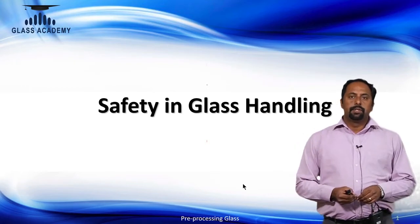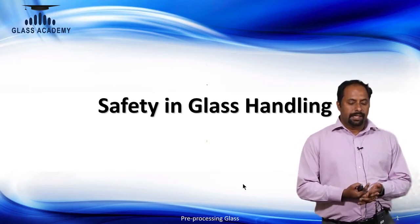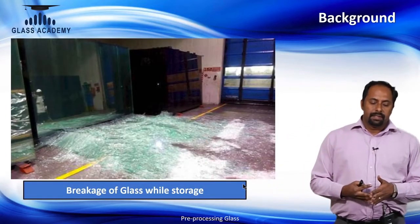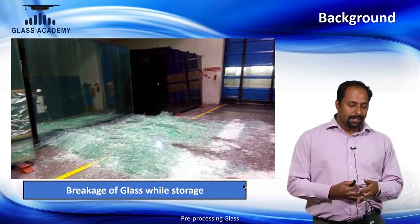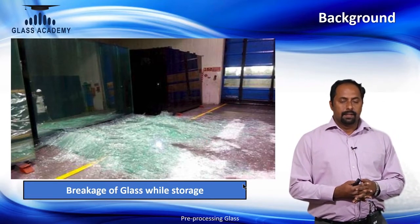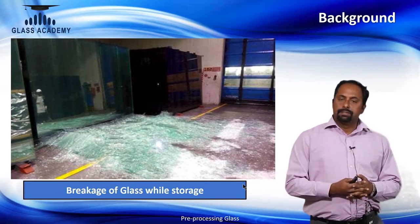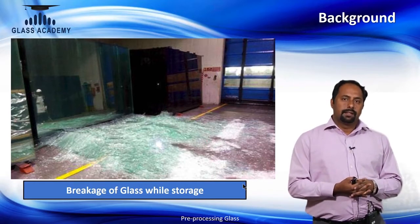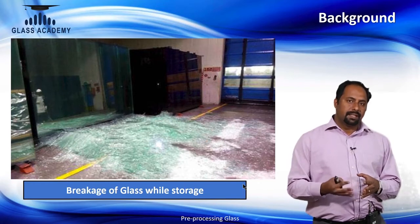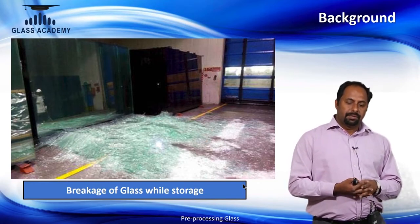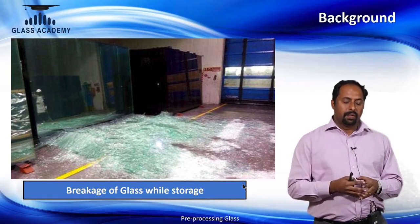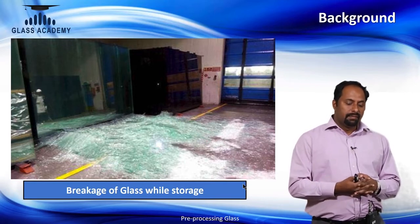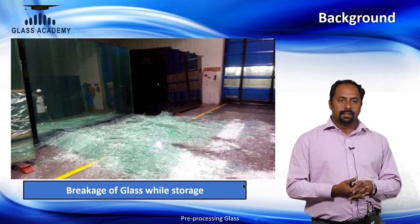Good morning. Today we are going to talk on an important subject: safety in glass handling. The background picture shows breakage of glass during storage. This problem has two angles — first, the potential hazard at the time of breakage, and second, the spilled cullets over the place after breakage, creating a hazardous condition where people can slip, trip, fall, and sustain injuries.